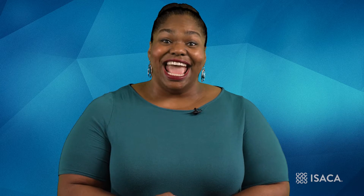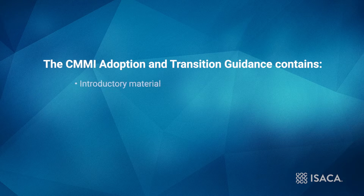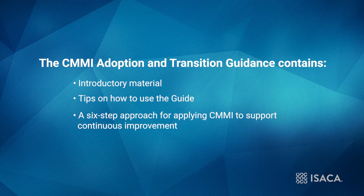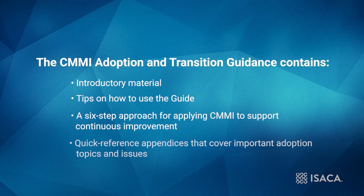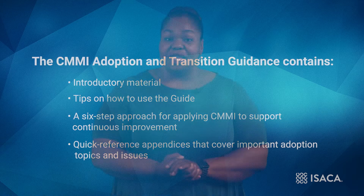Now that you have downloaded a copy, let's look at how the information in the CMMI Adoption and Transition Guidance is presented. As you review it, you'll notice that the guide has been structured to make it easy to navigate so that you can quickly find what you're looking for. The CMMI Adoption and Transition Guidance contains introductory material, tips on how to use the guide, a six-step approach for applying CMMI to support continuous improvement, and quick reference appendices that cover important adoption topics and issues. First, we'll look at the six steps and describe how the information is presented in them. After that, we'll highlight some of the appendices that may be of immediate benefit to you.